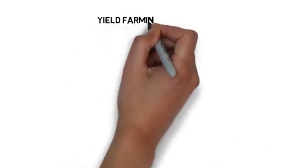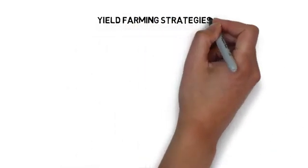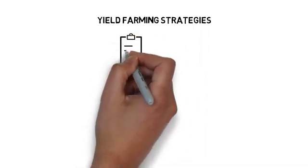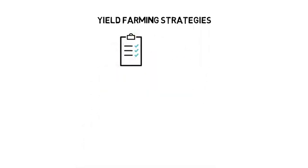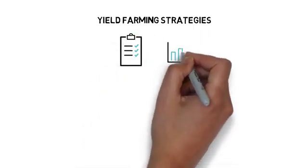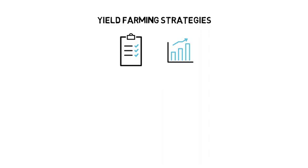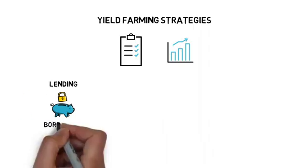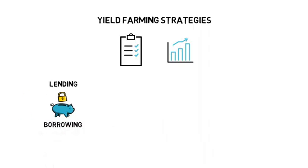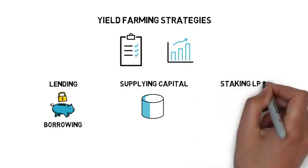Yield farming strategies are sets of steps that aim at generating a high yield on capital. These steps usually involve at least one of the following elements: lending, borrowing, supplying capital to liquidity pools, or staking LP tokens.